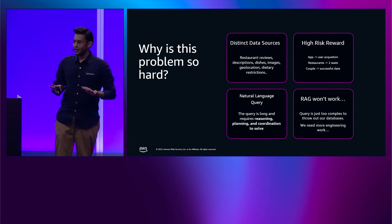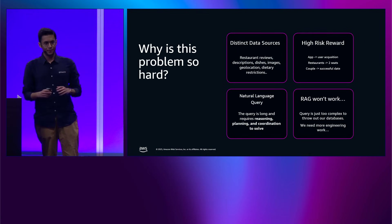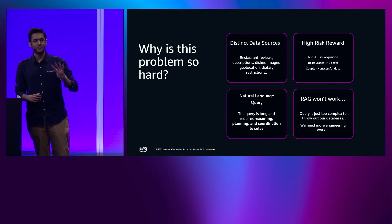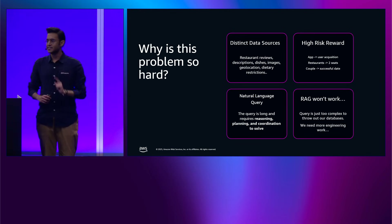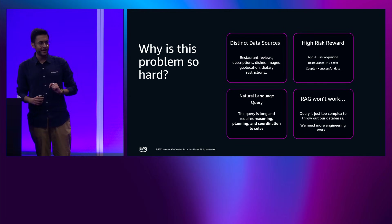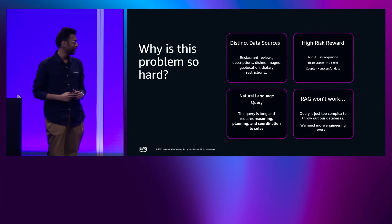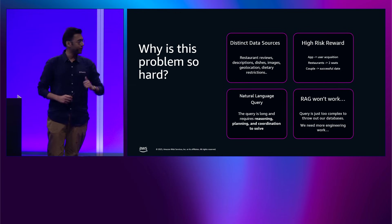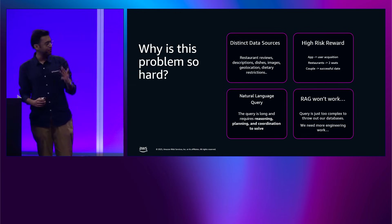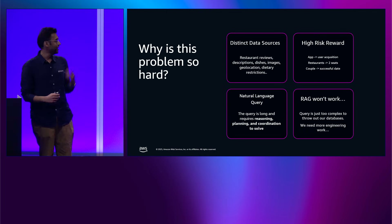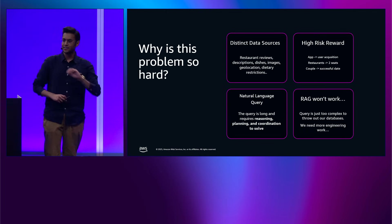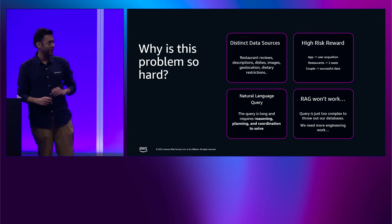Let's think a little harder about what makes this problem so difficult. There are four distinct issues. Number one, there are a lot of distinct data sources that you have to reconcile. Having many distinct data sources is difficult for a retrieval augmented generation system to resolve. You need to look at restaurant reviews, descriptions, dishes, images, what people are saying, where these restaurants are, any dietary restrictions associated with those dishes. Just thinking about how to maintain context around all of those data sources is a pain.